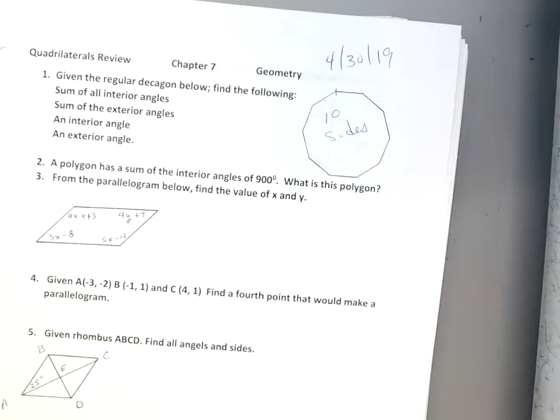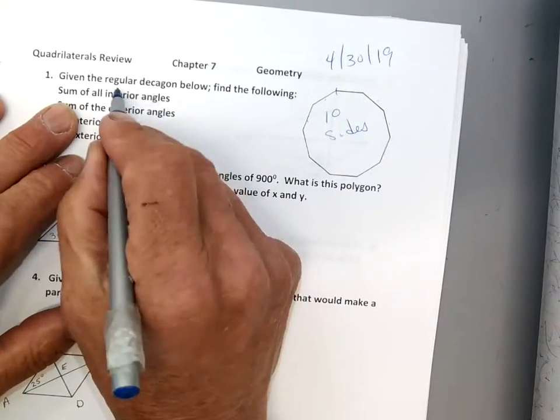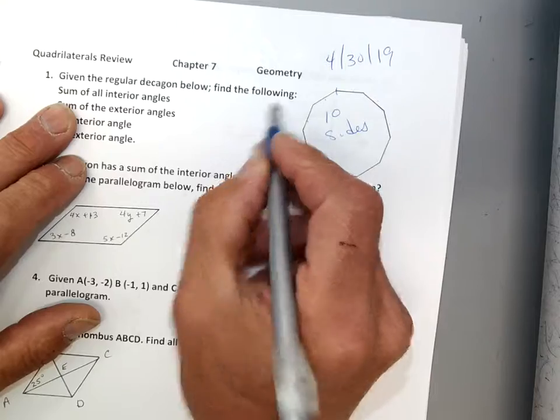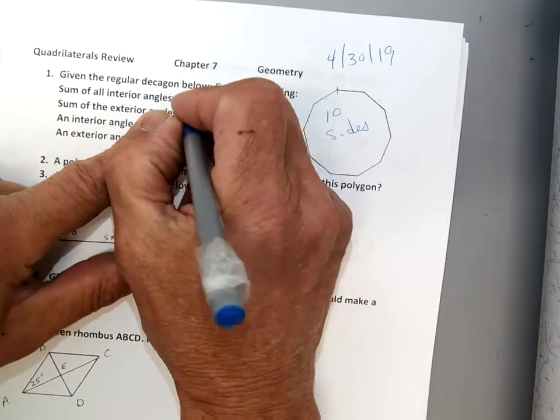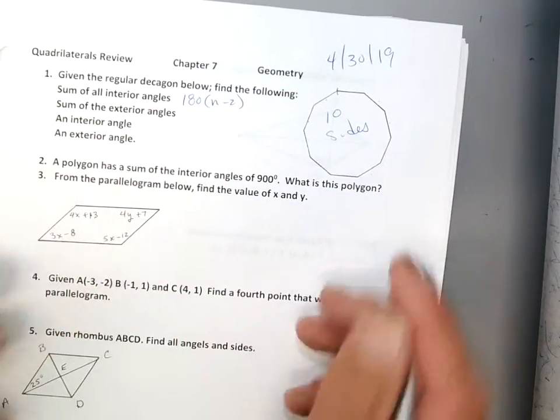Okay, girls, you guys, go ahead and go outside. I'll do this. Okay? So, given the regular decagon below, find the following. So the sum of all interior angles, we're going to use 180 times n minus 2. That's the form I want to use, okay?